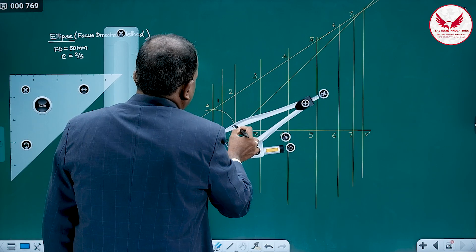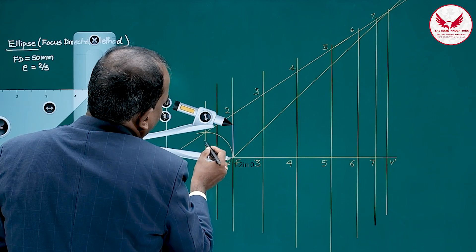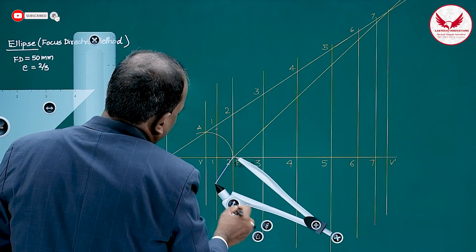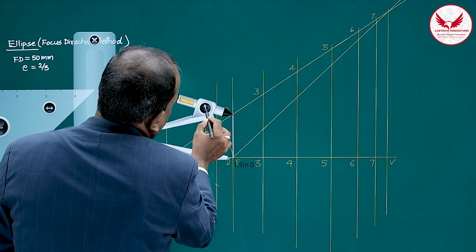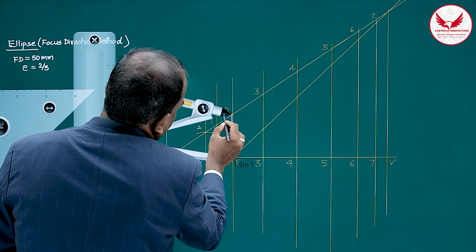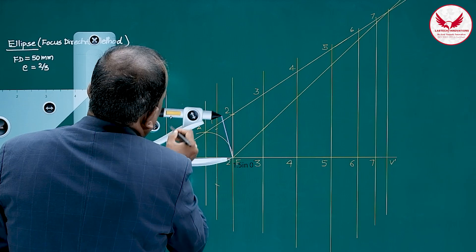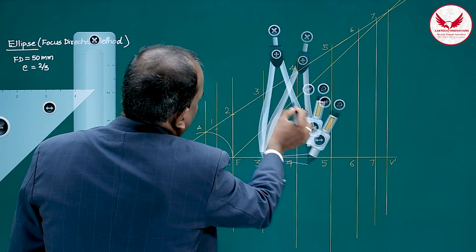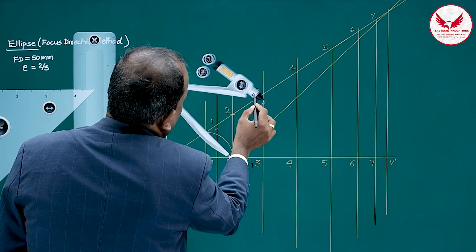Take the distance from D to line 1 in the compass, shift the compass to the focus, and cut an arc on line 1 — one point on the upper side and one on the lower side. For line 2, since it passes through the focus, one point is at the focus itself and one is on the lower side. For line 3, take distance 3 to 3, keep compass at focus, and cut the arc on line 3.